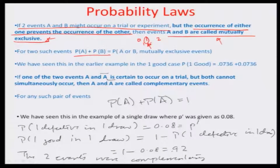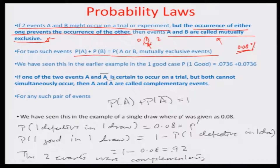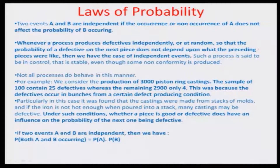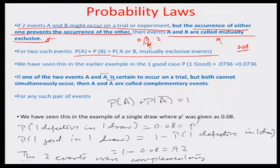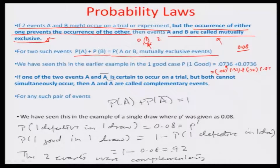For two such mutually exclusive events, the probability of A plus the probability of B is the total probability of A or B. For example, if 8 percent is the percentage defective, then in one draw either one defective is 0.08 times one good which is 0.92, giving 0.0736, or the first is good and the second defective — again mutually exclusive. This is a good example of mutually exclusive events.